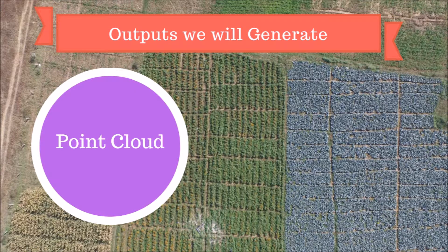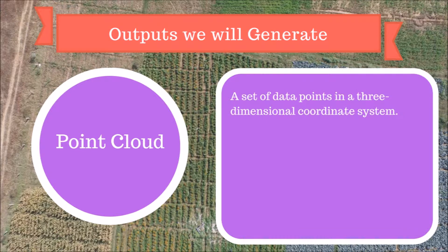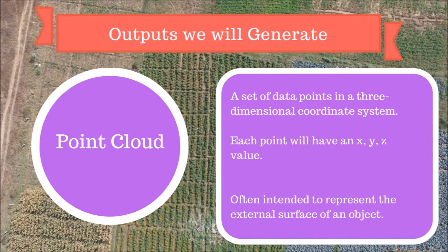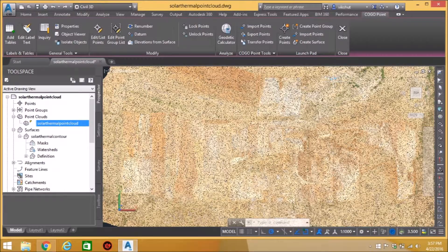A point cloud is a very dense set of data points in a given coordinate system. The X, Y and Z position and the color information is stored for each point of the point cloud. It represents the external surfaces of any 3D object or terrain. Here is an example of a densified point cloud of a terrain represented in AutoCAD.